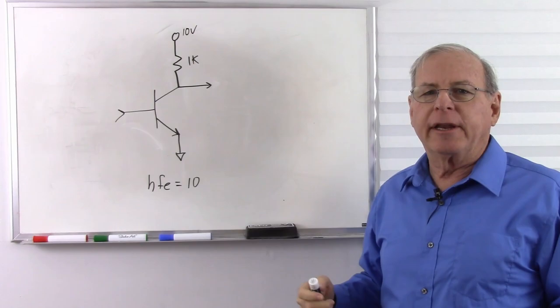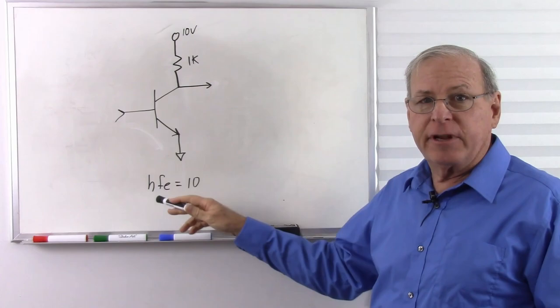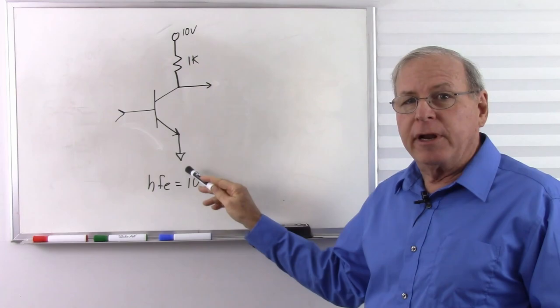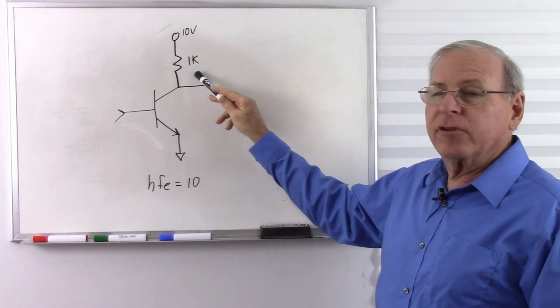To understand an open collector circuit, let's start by looking at a simple common emitter circuit. Here we have a transistor with an HFE of 10. As a reminder, that means that for every milliamp of current I put into the base, I'm going to get 10 milliamps into the collector.